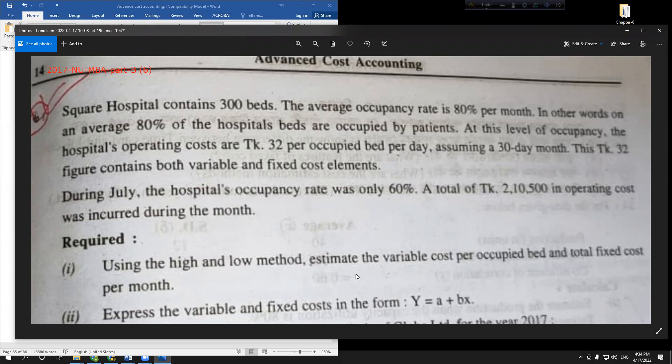Using the high-low method, estimate the variable cost per occupied bed and total fixed cost per month. We need to express variable and fixed cost in the form of Y = a + bx. This is the cost function equation format.